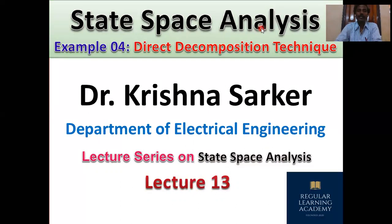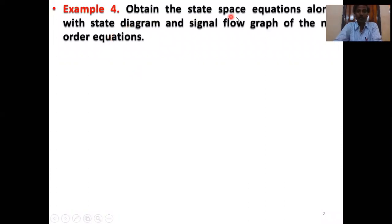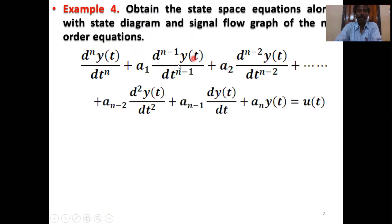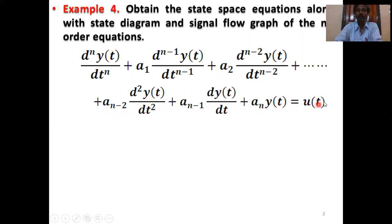Our topic is state space analysis, example 4. Obtain the state space equations along with state diagram and signal flow graph of the nth order differential equation: d^n y(t)/dt^n plus a1 d^(n-1) y(t)/dt^(n-1) plus a2 d^(n-2) y(t)/dt^(n-2) plus ... plus dy(t)/dt plus a_n y(t) equals u(t).